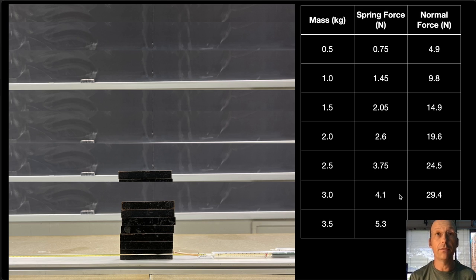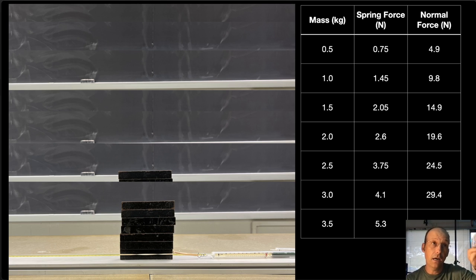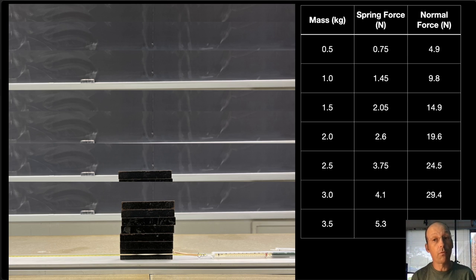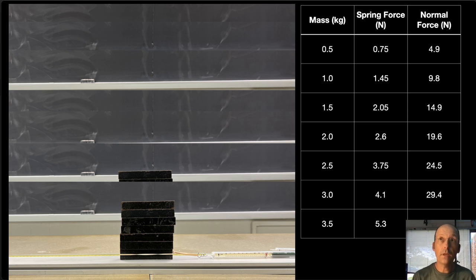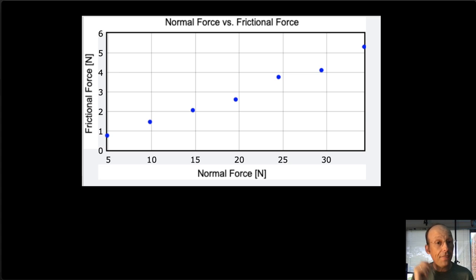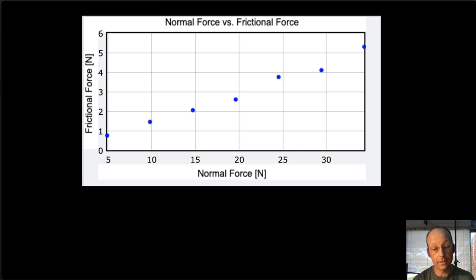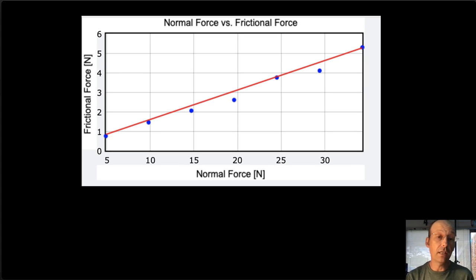From the mass of blocks, I calculate the gravitational force, which equals the normal force — just multiply mass times 9.8. The spring force is the friction force. So I have friction force and normal force N, and I plot friction force versus normal force. This is real data; I just did the best I could. I fit a best-fit line to it.